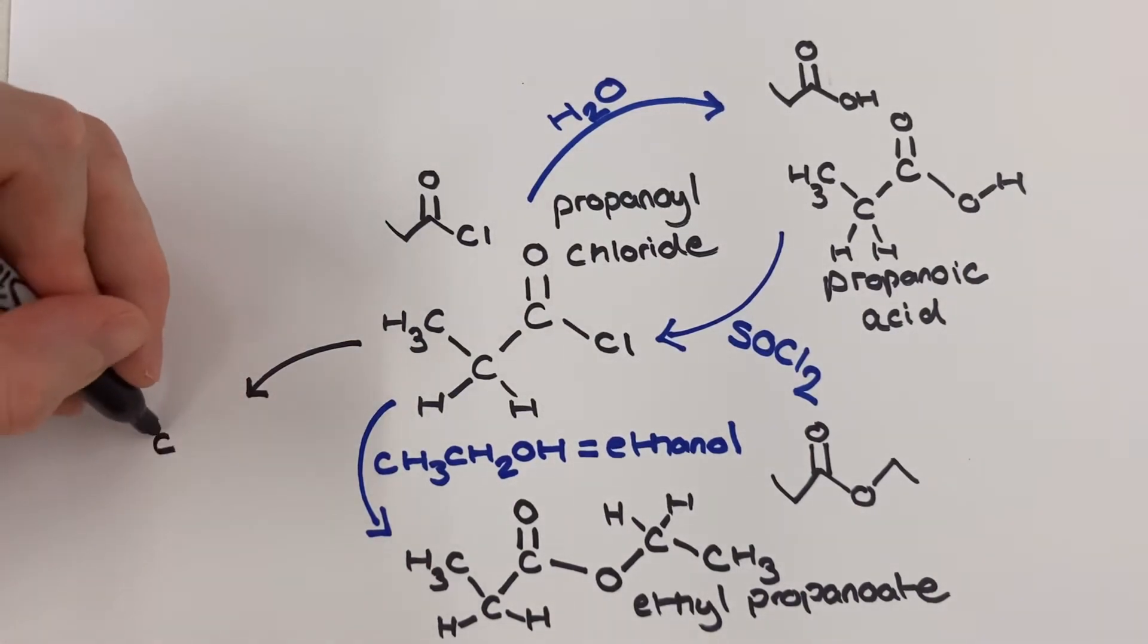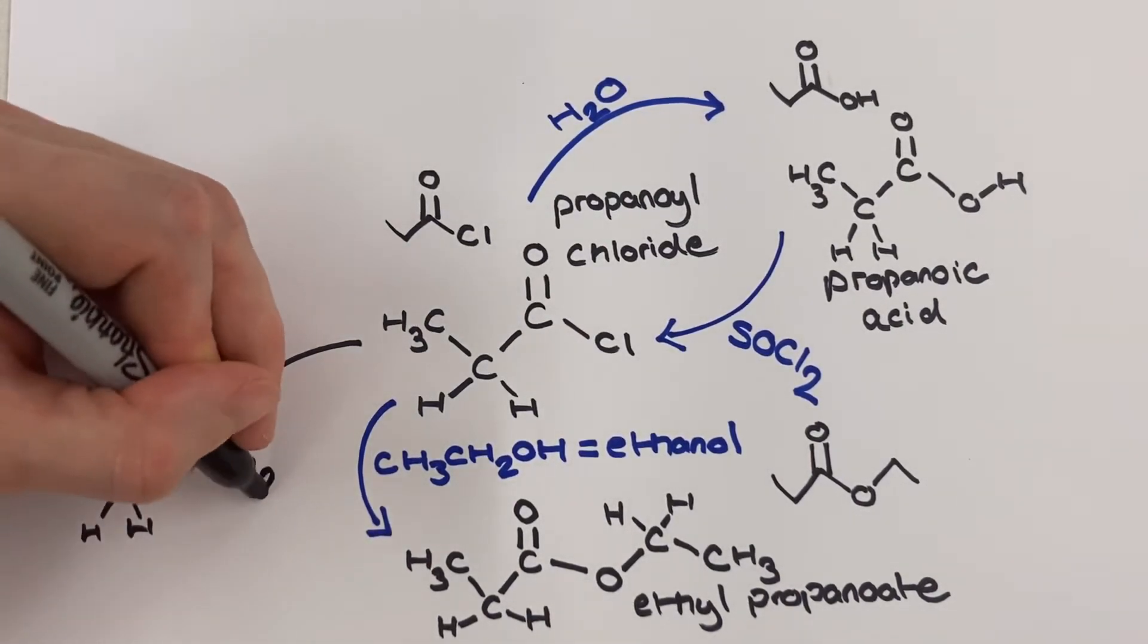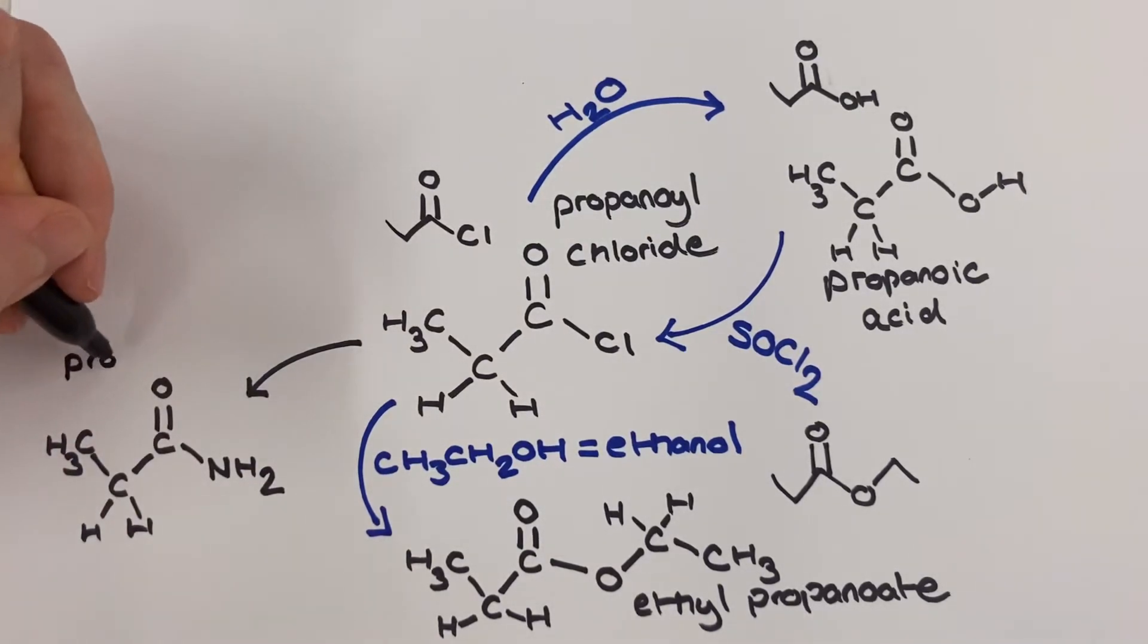Our fourth reaction on this acyl chloride aliphatic reaction summary is for the formation of propanamide which is an example of a primary amide.